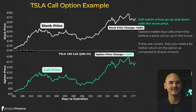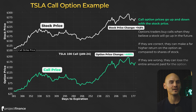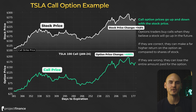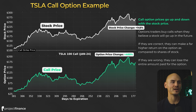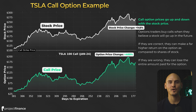If they are correct, they can make a far higher return on the option as compared to shares of stock. And if they are wrong, they can lose the entire amount paid for the option. In this example, the stock price went up about 150% and this specific call option increased by 400%, which is more than three times higher than the actual stock's return, presenting a much greater opportunity for profitability for those that purchase call options in Tesla over this period.